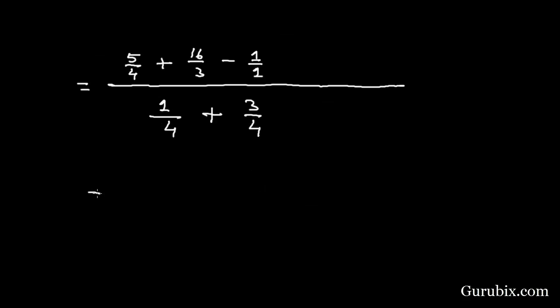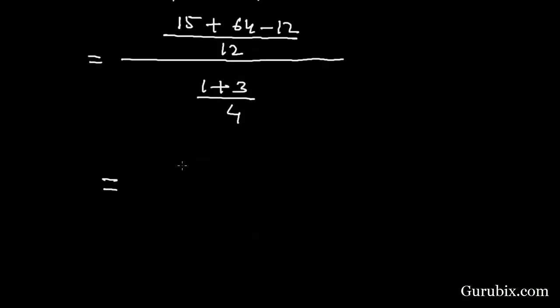If we further solve this value, we shall take LCM in the numerator. Then the LCM will be 12. This value becomes 15, here we have 64 minus 12. And this equals 1 + 3 over 4. This value is 67/12 times 4/4